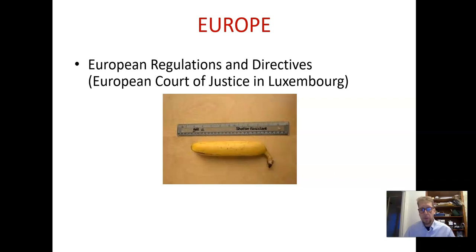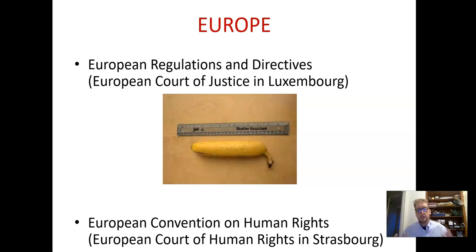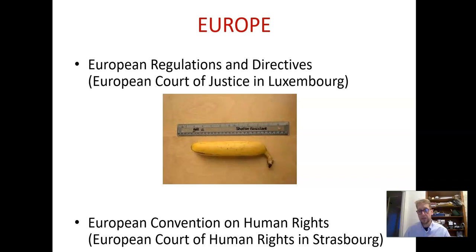A really important source of law is the European Convention on Human Rights. We've now left the influence of the European Court of Justice through Brexit — all those jokes that used to be made about straight bananas being set by the European Court of Justice. But the European Convention on Human Rights, administered by the European Court of Human Rights in Strasbourg, we're still subject to that, and it's actually enshrined in our law. So there's been a change, but we are still under the influence of the European Convention on Human Rights.